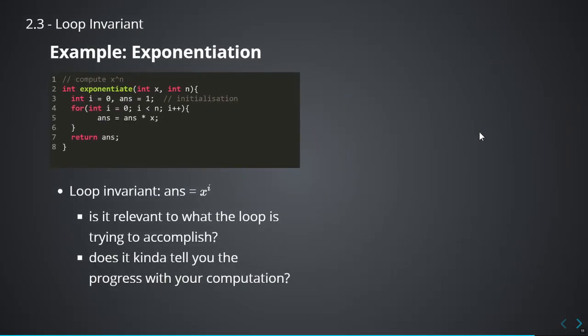So I have it there that the loop invariant is ans equal to x to the i. Now ask yourself, is that relevant to what the loop is trying to do? Yes it is, because we're trying to compute x to the n. And if ans equals x to the i, you can see that ans is where the result is stored as we progress. You can see that there's progression here, because ans will change every time i increases. The actual loop invariant statement doesn't change — what changes is the value of i and the value of ans.